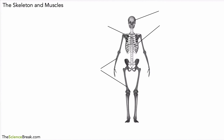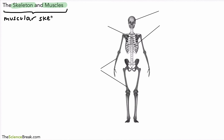Today we're looking at the skeleton and the muscles in the body. This is for Key Stage 3 biology. When we talk about these two working together, we refer to this as the musculoskeletal system. We're going to see how this works together in a moment, but first we need to know the important roles of the skeleton.